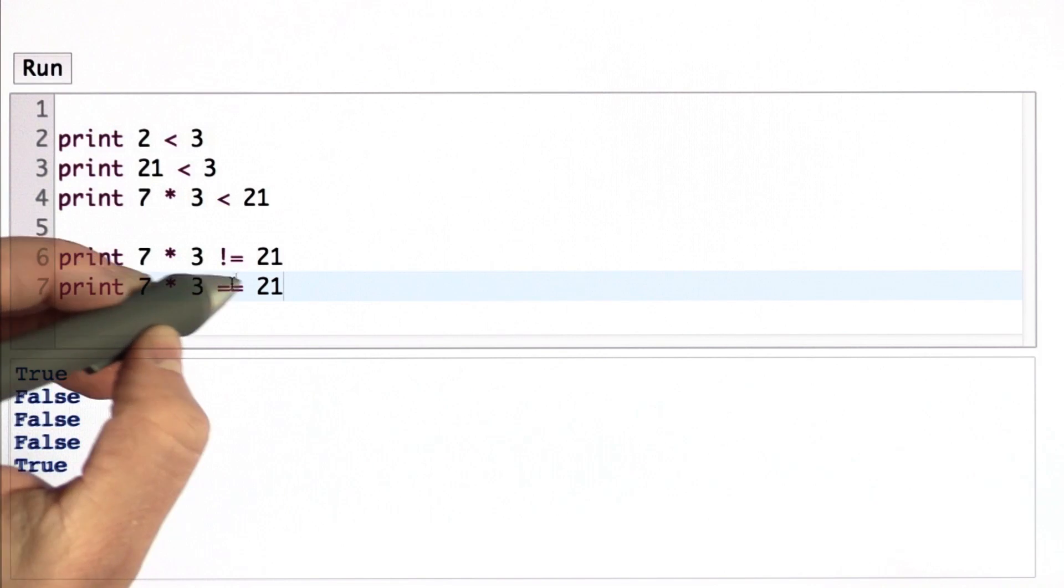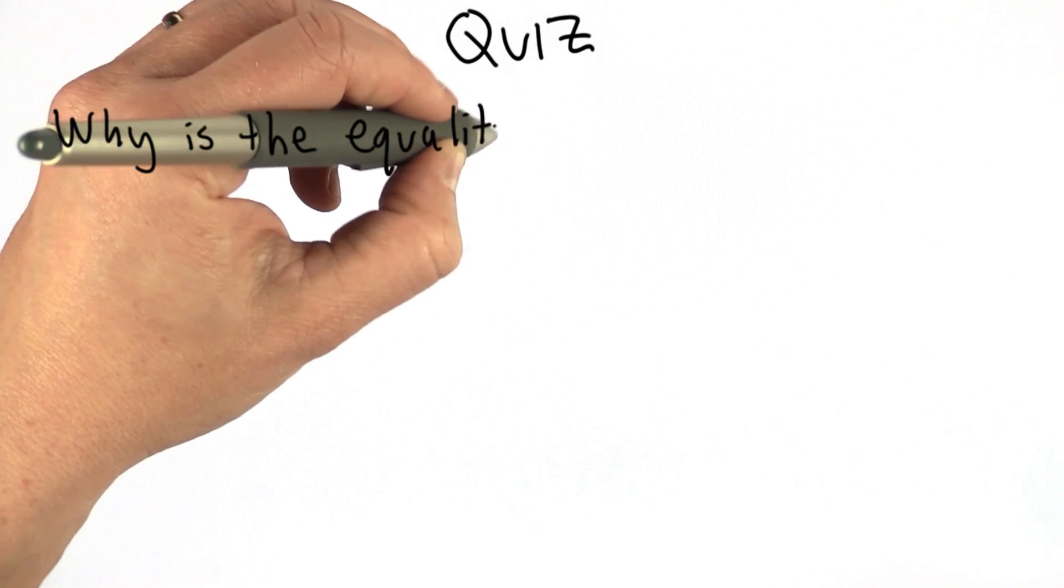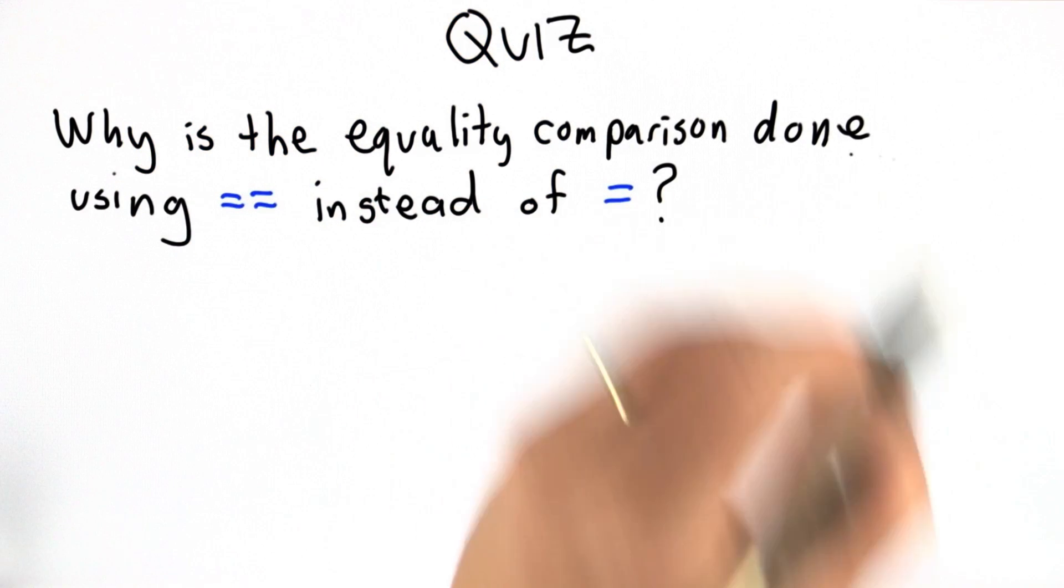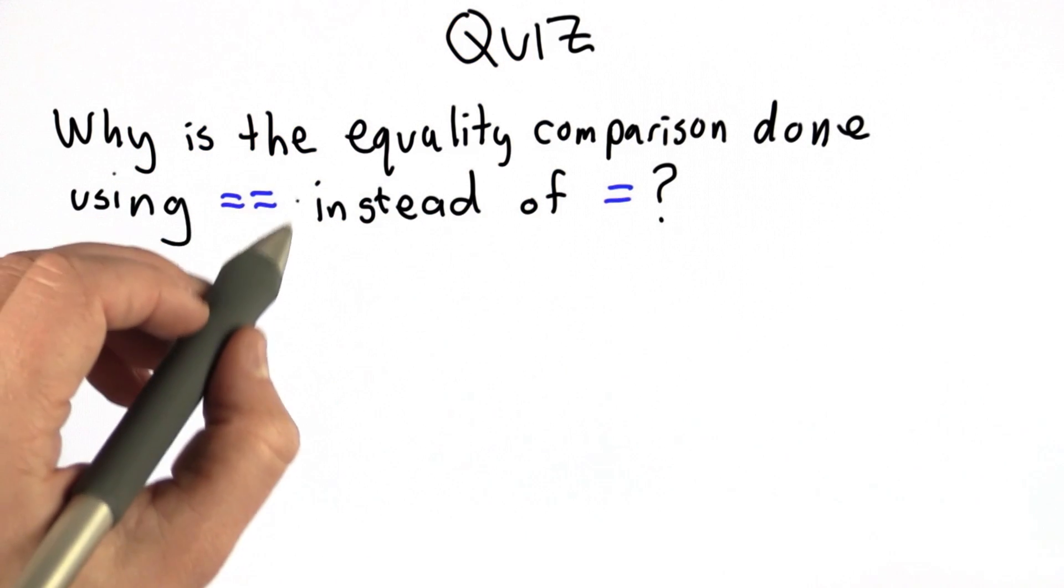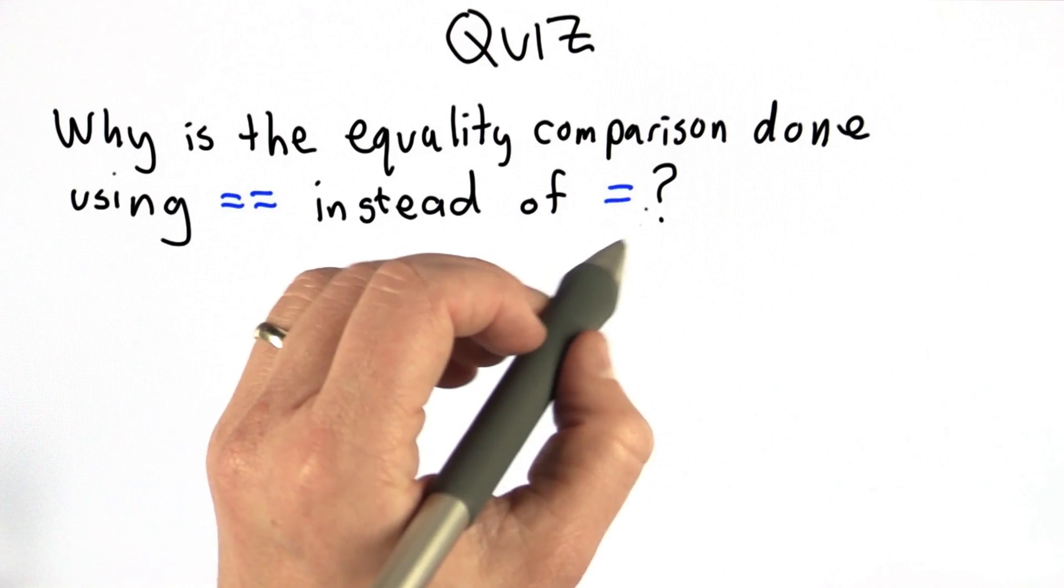So now we're going to have a quiz to see if you can figure out why we need to use the double equal here instead of just the single equal. So the question is, why is the equality comparison done using double equal sign, having two equals, instead of just a single equal sign?